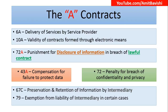Quick recap: 6A — AMC, Annual Maintenance Contract. 10A — Validity of electronic contracts. 72A — Punishment for disclosure under a Lawful Contract. 43A — Compensation for failure to protect data. 72 — Penalty for breach of confidentiality and privacy, not because of a Lawful Contract but because of the IT Act itself. 72A is for Lawful Contract. 67C — Preservation and Retention of Information by Intermediary. 79 — Exemption from Liability of Intermediary in certain cases. I guess that's it for Part 3.